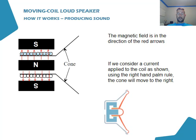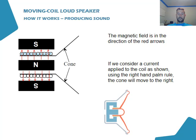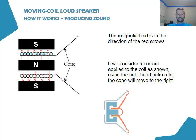We can also see that if we apply this to the bottom part of the magnet, the force will be in the same direction, however the magnetic field and the current are in opposite directions. So when the current is switched to either positive or negative, the cone moves in one way, as you can see in this animation.